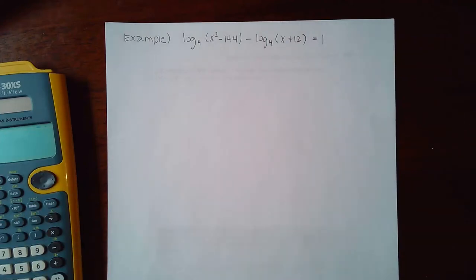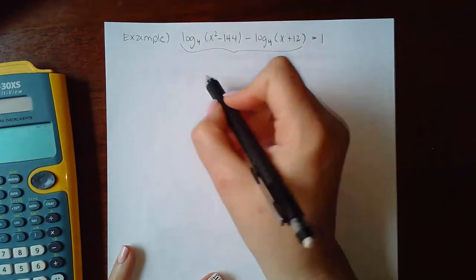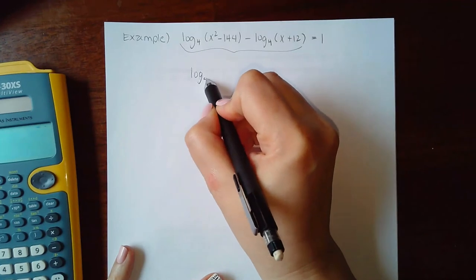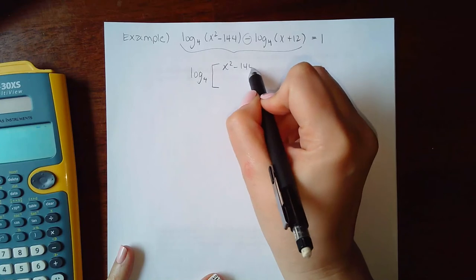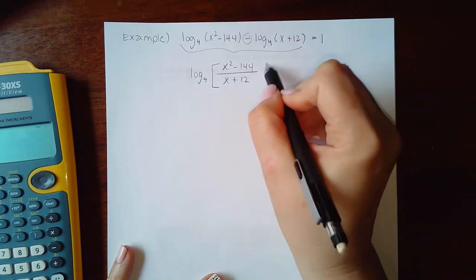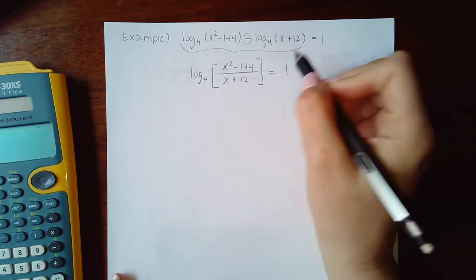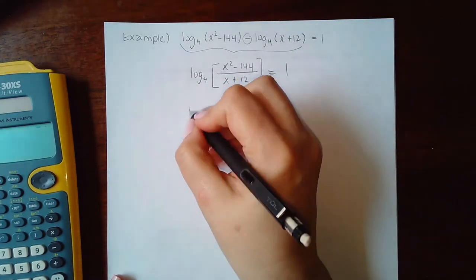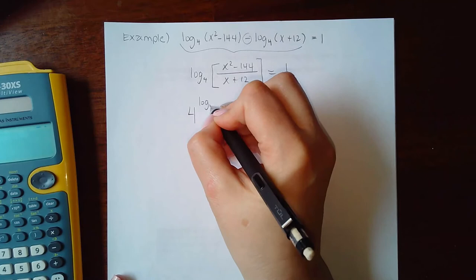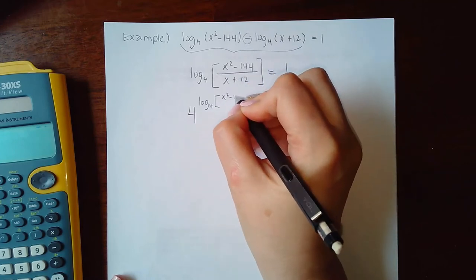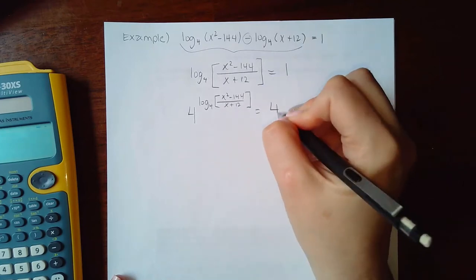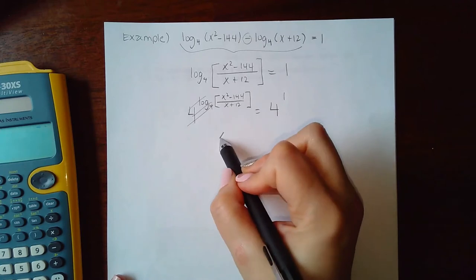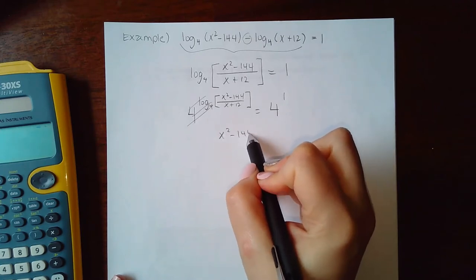This is another problem where we have two logs, so I need to combine these first. When I do that, there's a minus sign, which means I need to take the first argument and put it over the second argument. Since this is a log base 4, I'm going to take the exponential base 4 and apply it on both sides, and these will cancel, leaving me with x squared minus 144 over x plus 12.